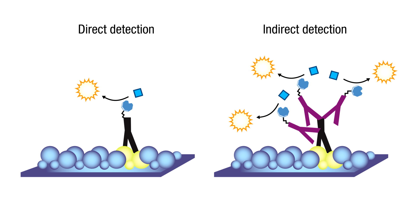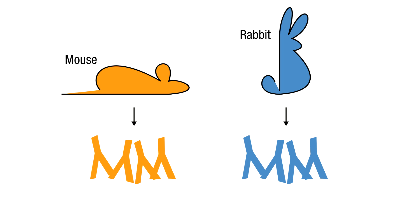Unlike other methods, indirect detection allows multiple secondary antibodies to bind to each primary antibody, resulting in signal amplification. Indirect detection strategies use antibodies made in different host species in order to restrict antibody binding to the intended target.